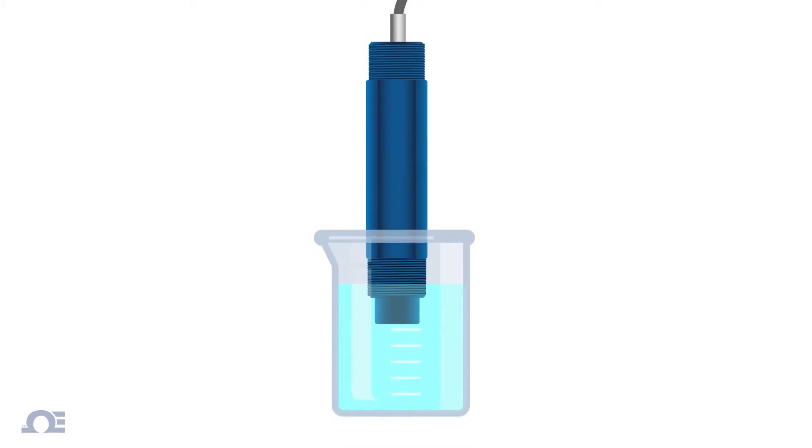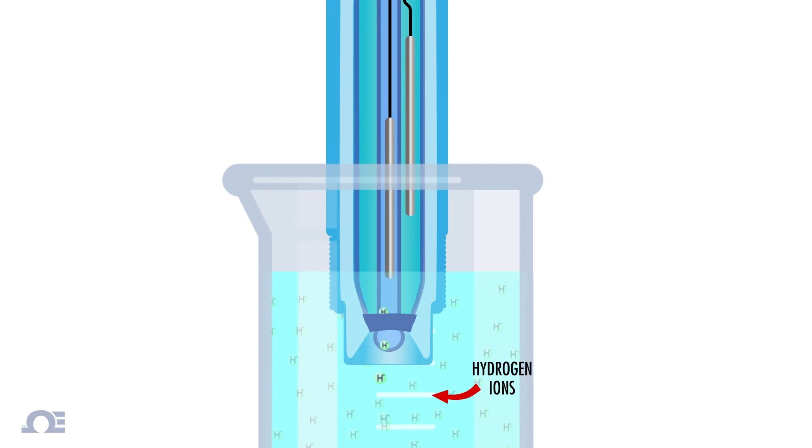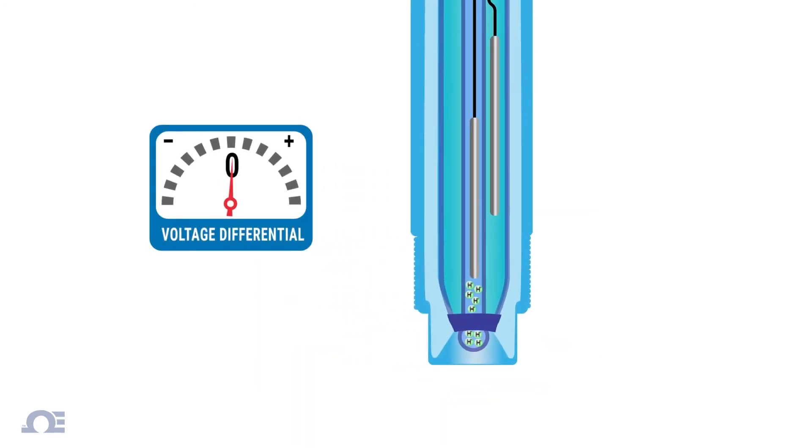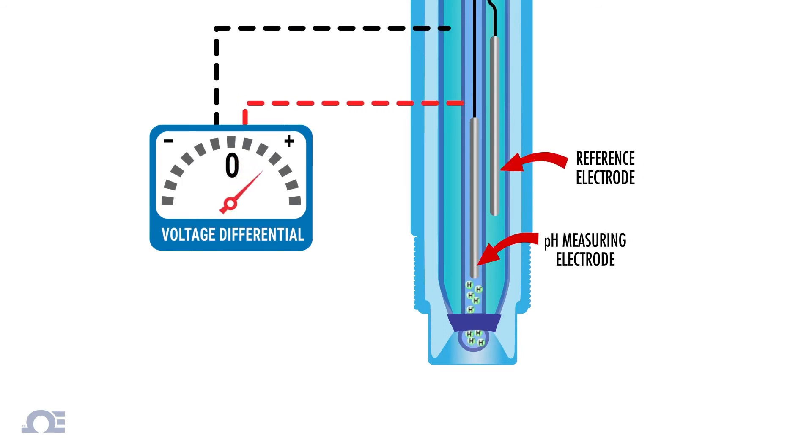pH sensors, commonly referred to as pH electrodes, are designed to allow hydrogen ions in the solution to pass through a selective barrier, generating a measurable voltage differential between the pH-measuring electrode and the reference electrode that's proportional to the solution's pH level.